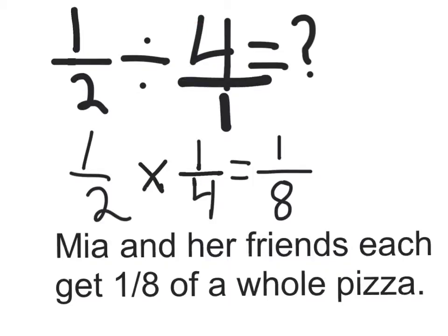When you're dividing fractions, you always want to multiply by the reciprocal of the divisor. The reciprocal means just flipping the number around. So, if it's four over one, it will be one over four.